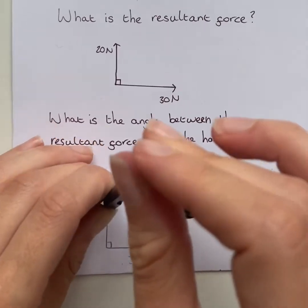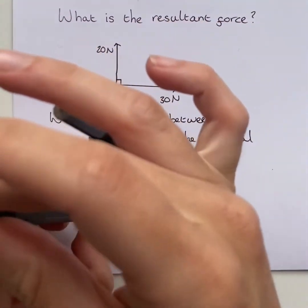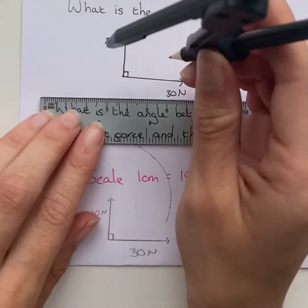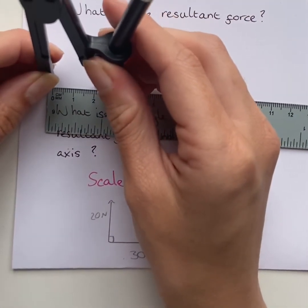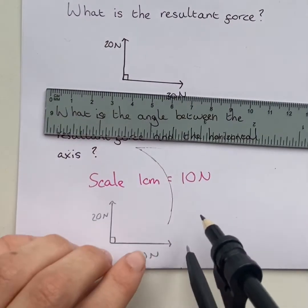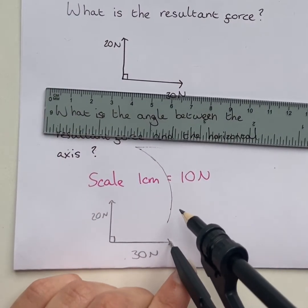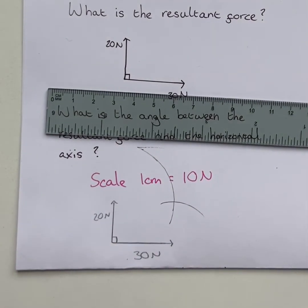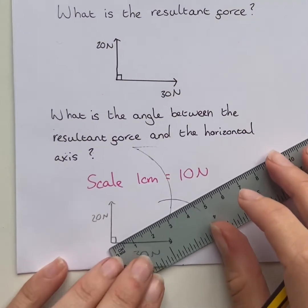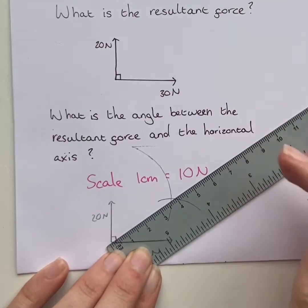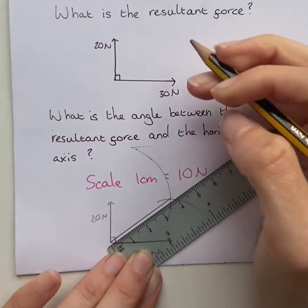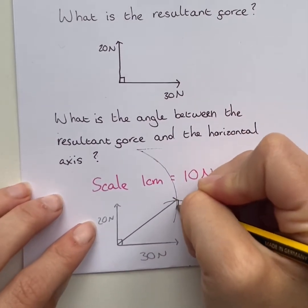I'm going to draw a nice arc coming off of that. Then I'll do the same for the opposite one — setting the compass to 20 newtons and drawing an arc off the end of the 30 newton force. You can see there's one point where those arcs cross, and that's our important point. Now I need to draw a nice arrow from the corner to that point where the arcs cross, and that is my resultant force.